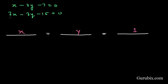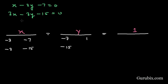We start with b1 and b2: b1 is minus 3, b2 is minus 3. Then c1 and c2: c1 is minus 7, c2 is minus 15. We repeat c1 and c2, then write a1 and a2: a1 is 1, a2 is 3. We repeat a1 and a2, and then write b1 and b2 again to complete the cross multiplication setup.